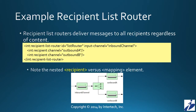And here's an example of a recipient list router. Recipient list routers, again, do not inspect the message. They simply take the message from a channel — in this case the inbound channel — and distribute it to its list of recipients. In this case, both outbound A and outbound B channels will receive any messages that come into the inbound channel.